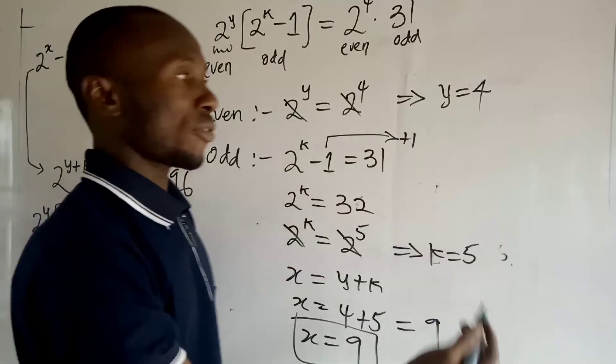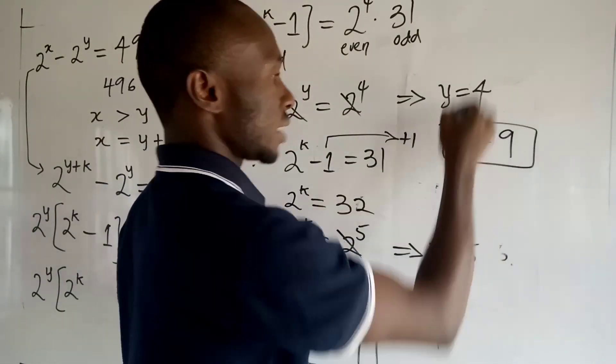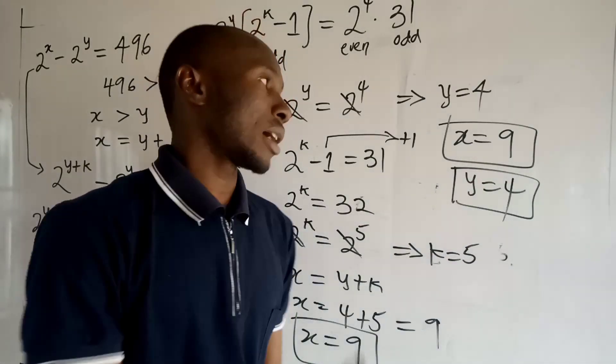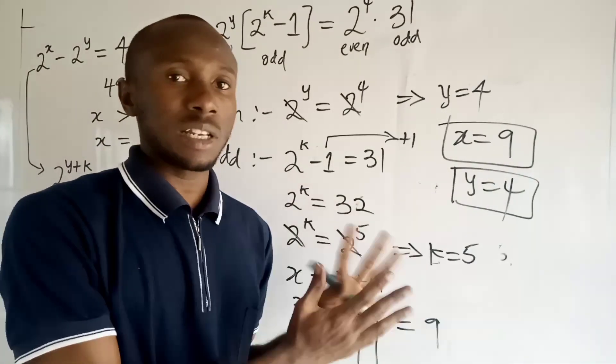So these are the values of x and these are the values of y. Therefore in conclusion, x is equal to 9 and y is equal to 4.